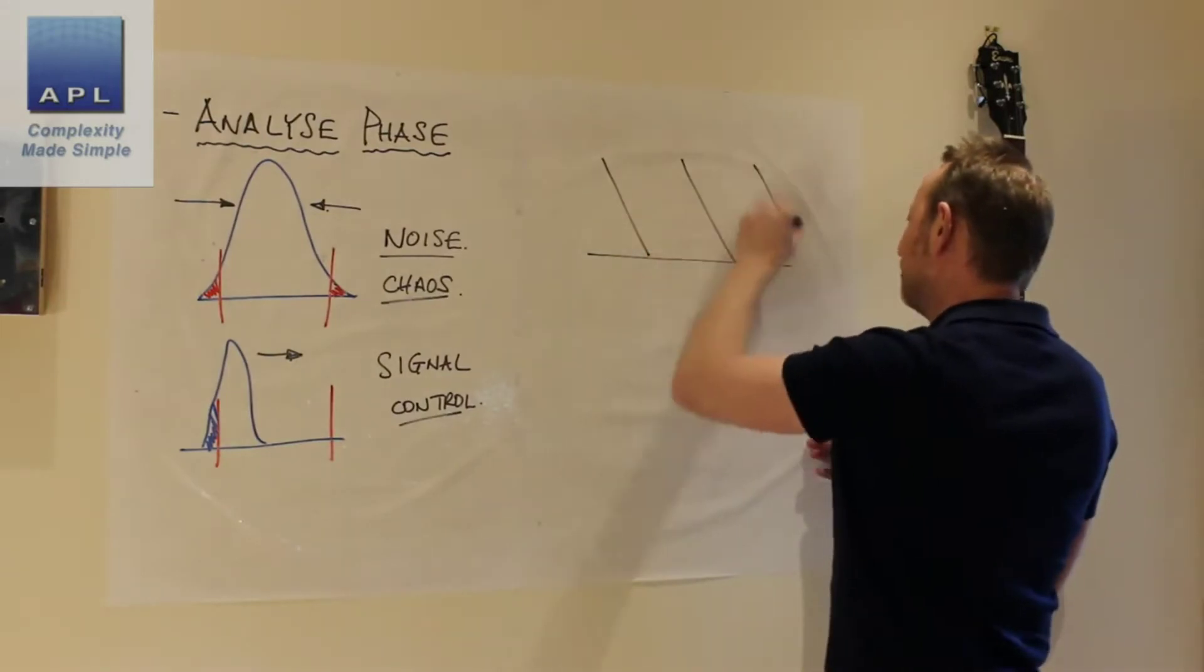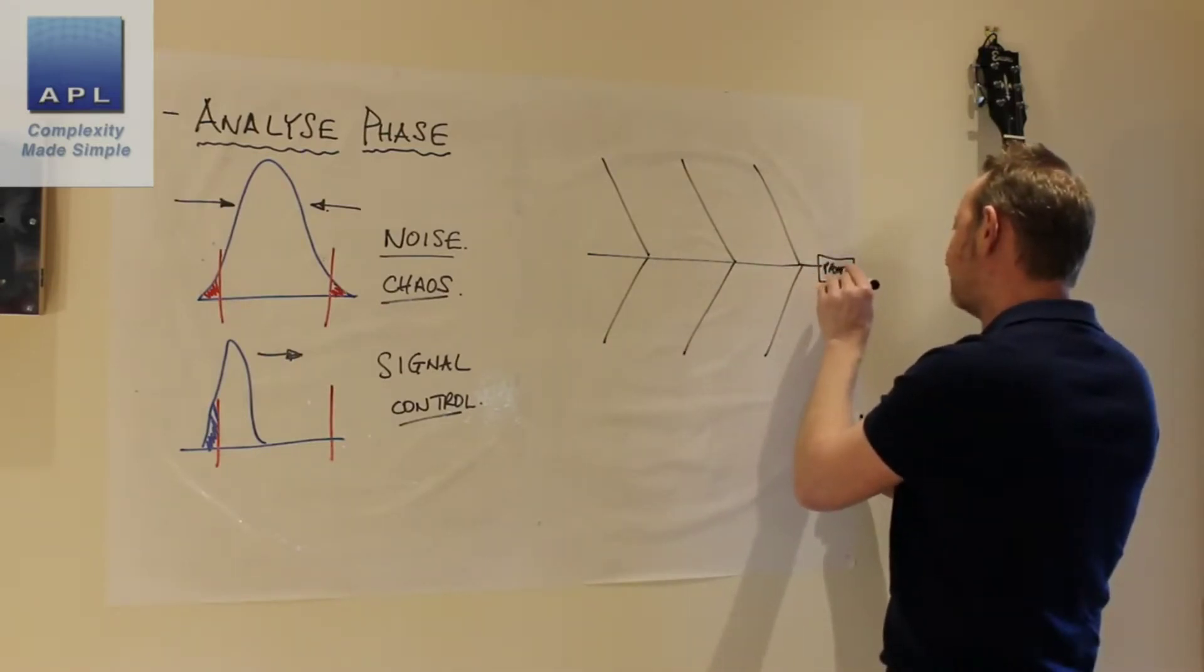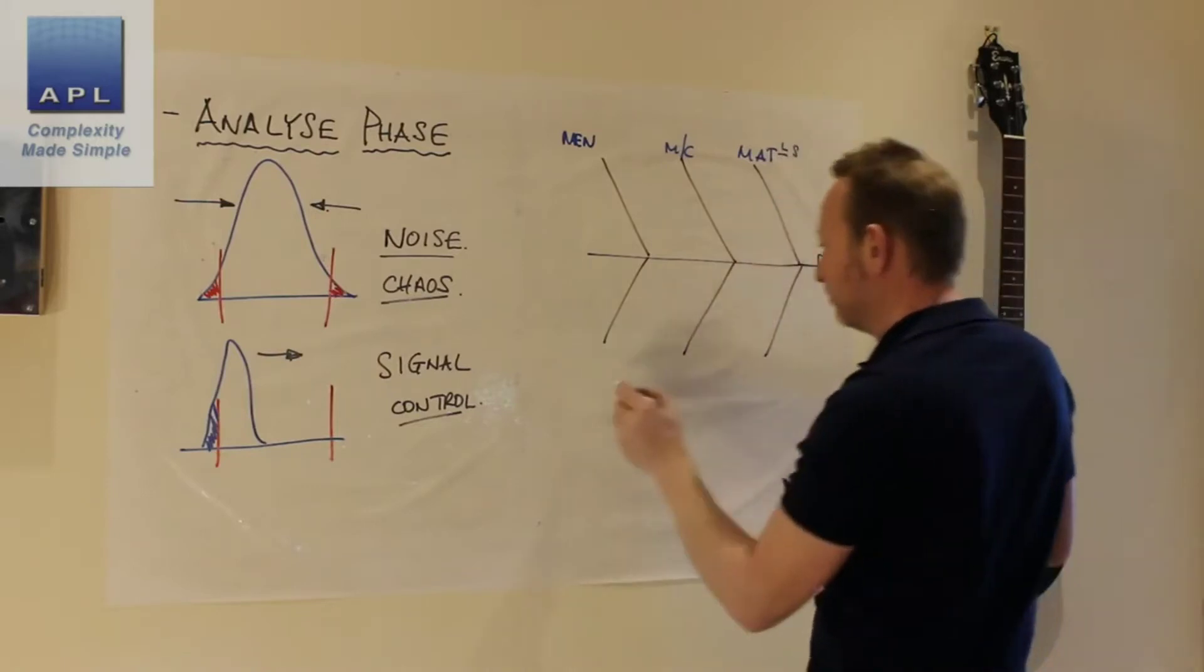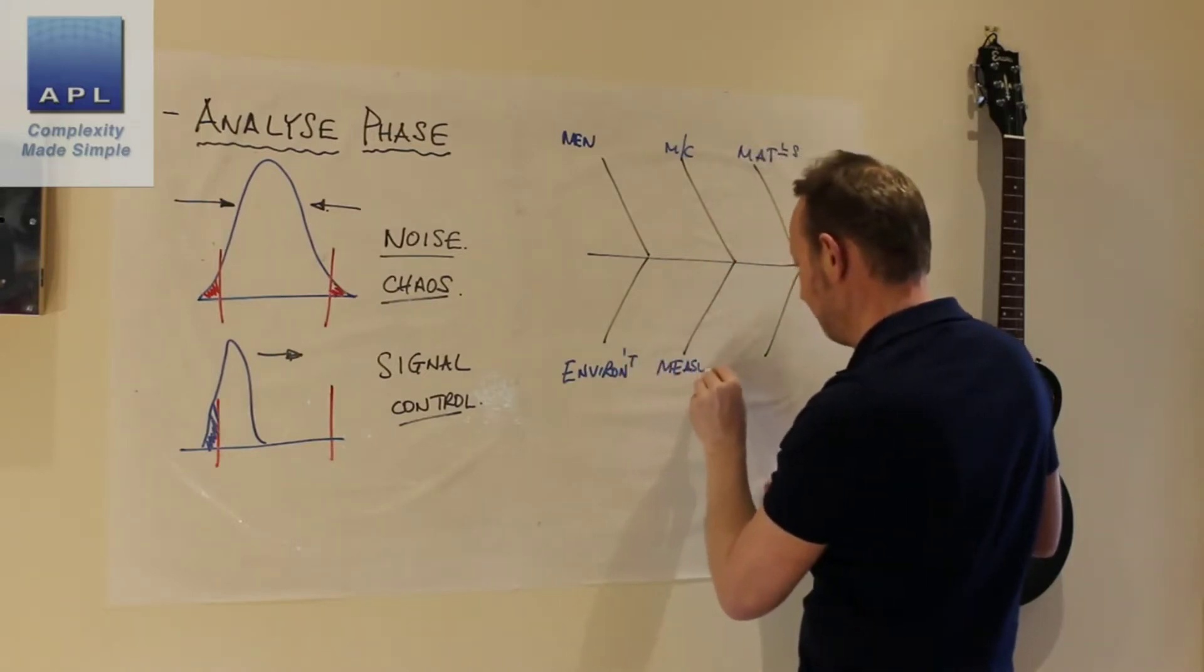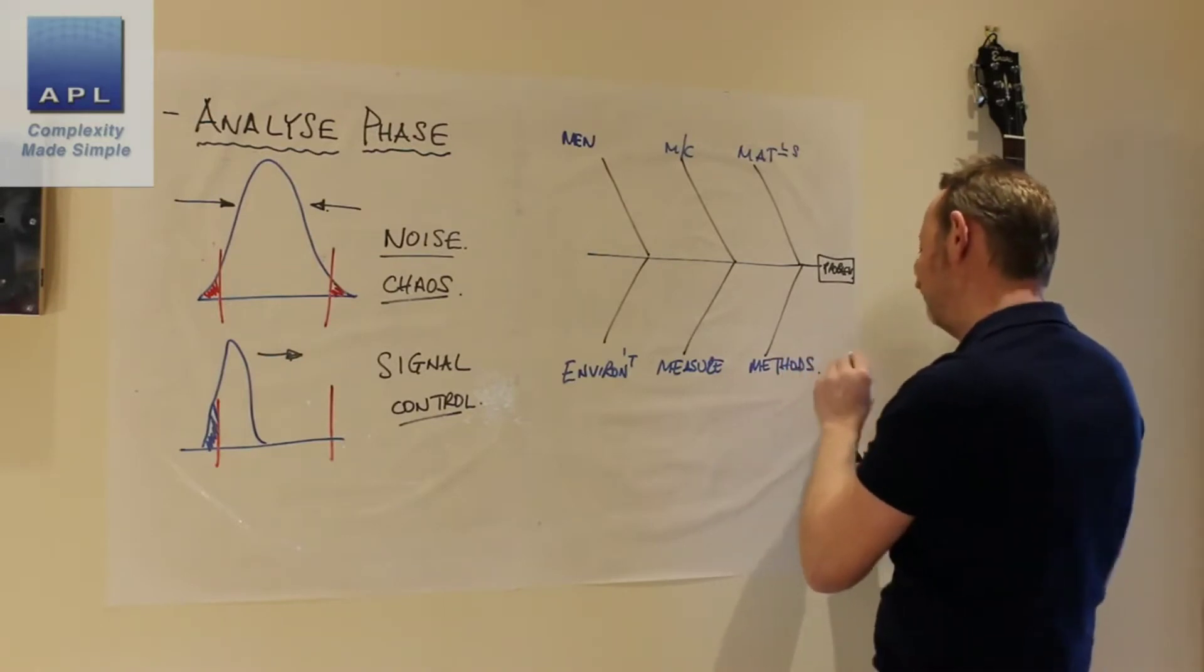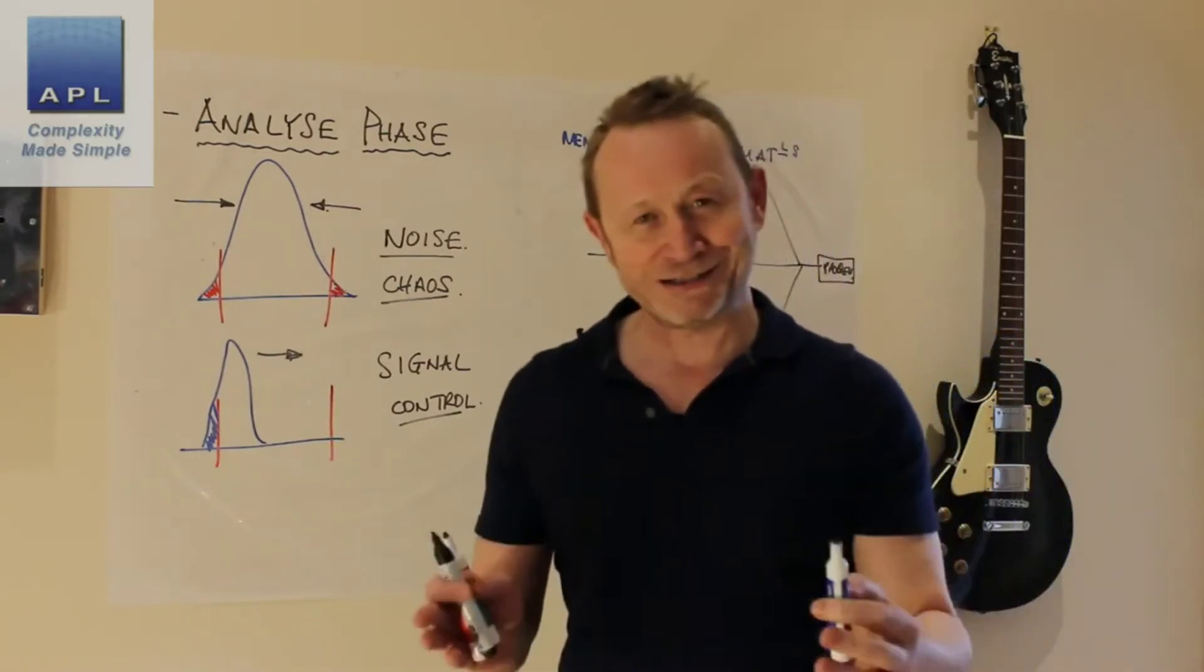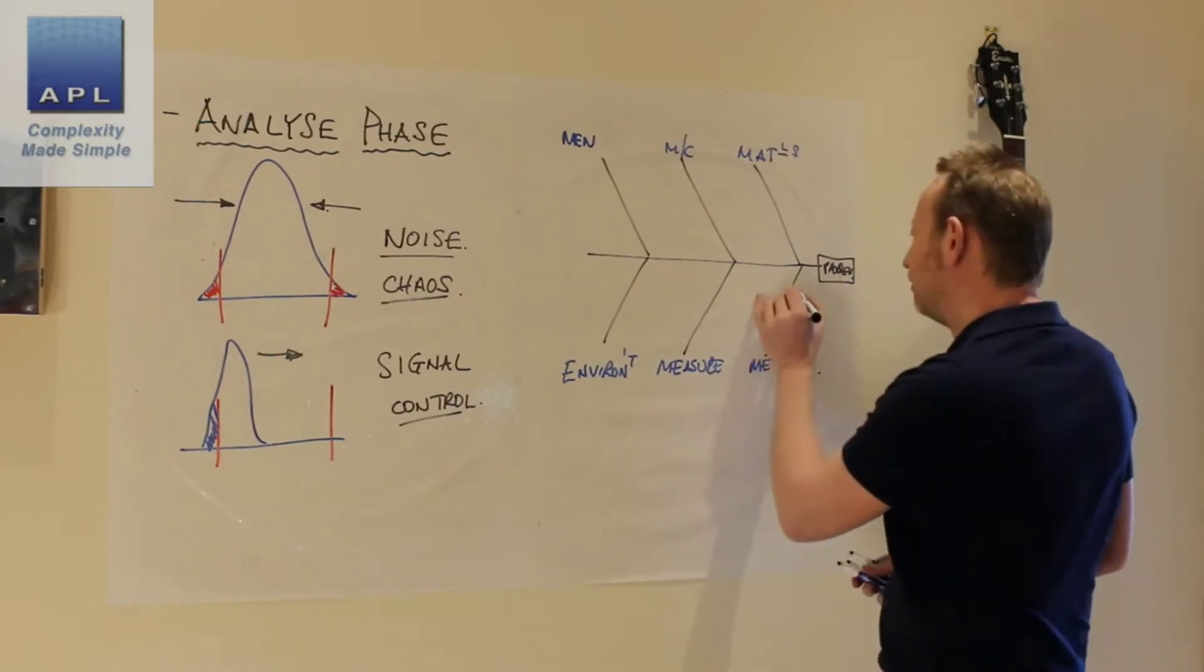What analysis technique am I going to use? I'm going to use this fine diagram right here, the cause and effect diagram. So here's my problem. Here we go: categories: men, machine, materials, environment, measurement, and methods. What you're trying to do here, you're trying to take variability out of the process. Therefore what does the cause and effect diagram do? It identifies every variable in the process and their current state of control.